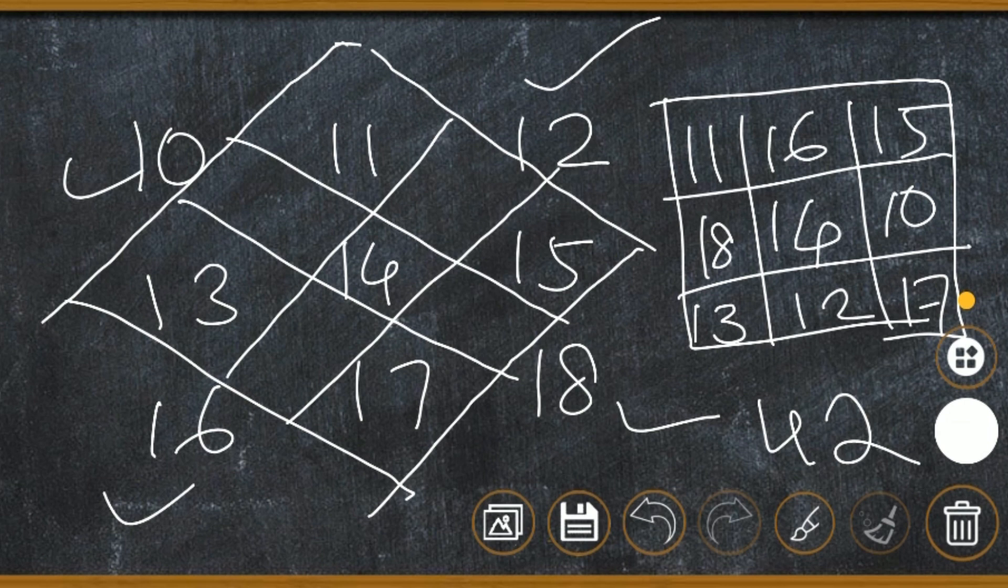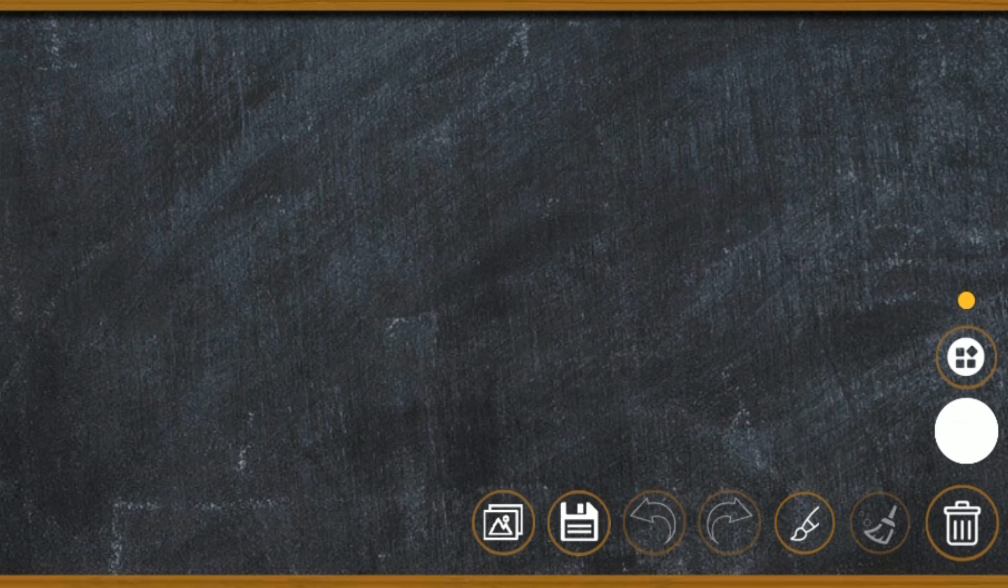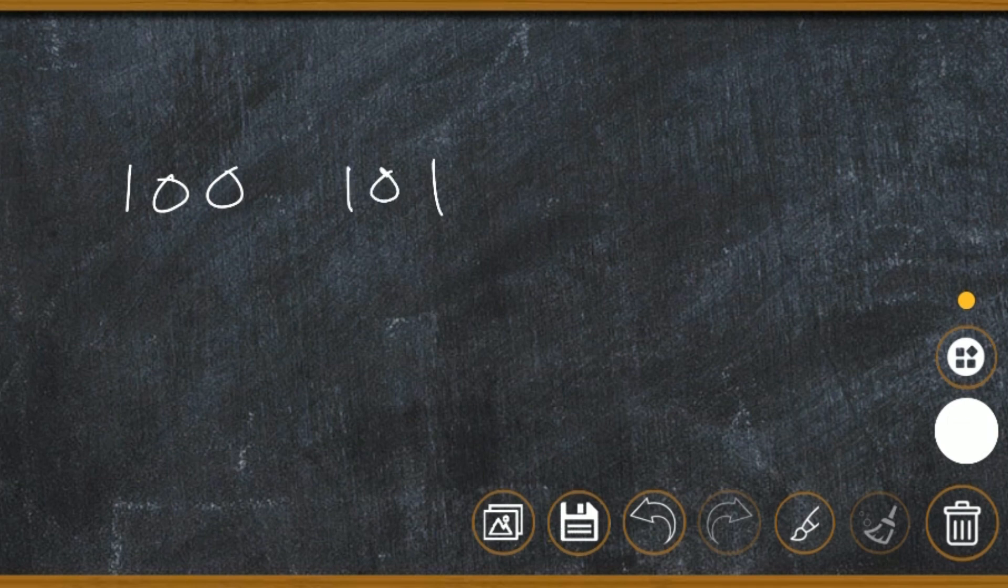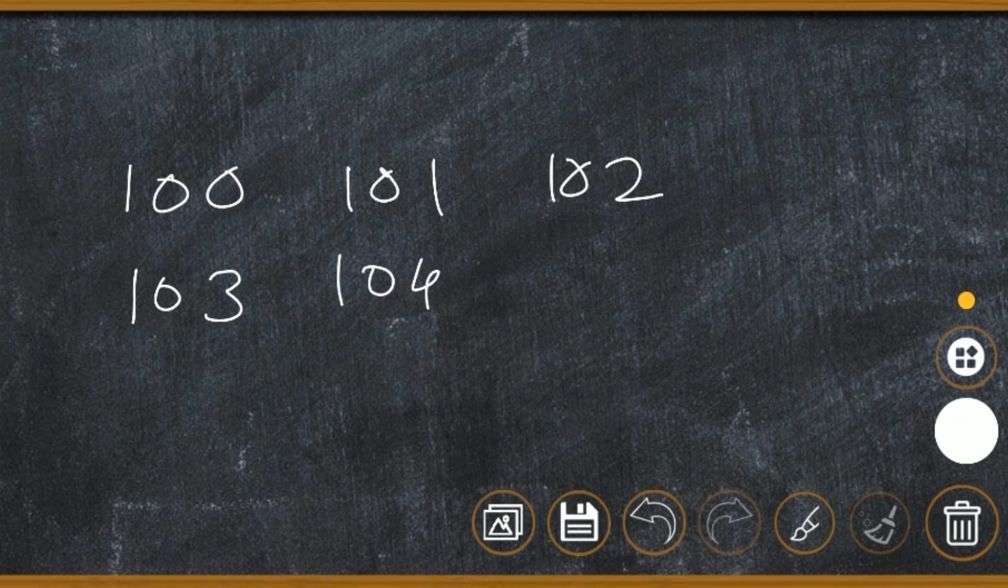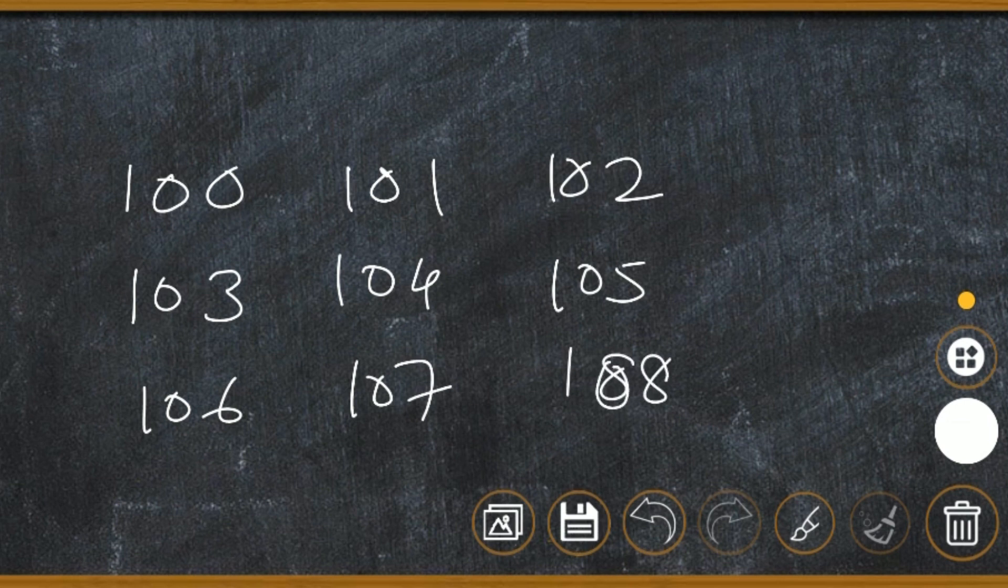We can make magic square with any numbers. But one thing, remember, write the numbers in the correct order, in the sequence order, just like counting. For example, 100, 101, 102, 103, one like this. You write the numbers in the correct sequence order, then draw the line and find out the magical box.